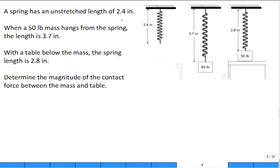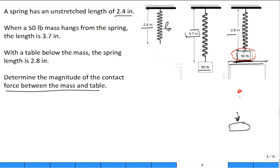We have a spring. The spring has an unstretched length of 2.4 inches. This is L-naught. You put a 50-pound mass from the spring, and now it dangles, and it has a length of 3.7 inches. You then introduce a table. So the 50-pound mass, still connected to the spring, sits on the table. And it has a stretch length of 2.8 inches. Determine the magnitude of the contact force between the mass and the table.